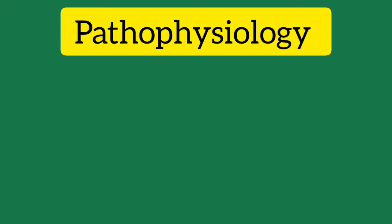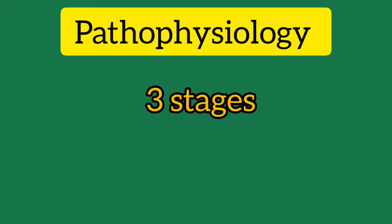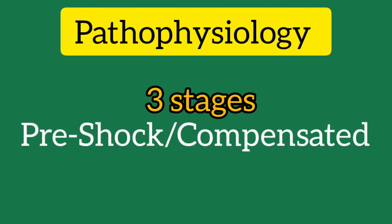Shock generally has three stages. The first is pre-shock or compensated shock, characterized by compensatory mechanisms to counter the decrease in tissue perfusion, including tachycardia, peripheral vasoconstriction, and changes in systemic blood pressure.